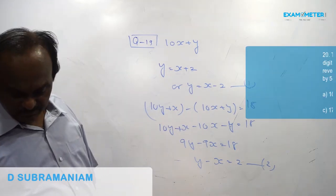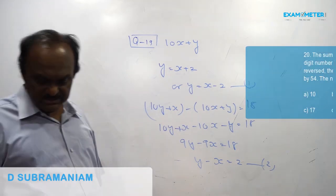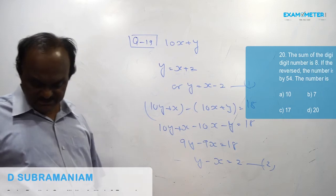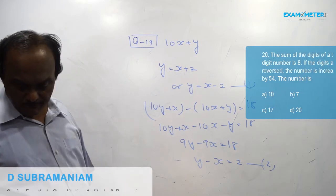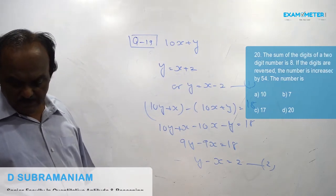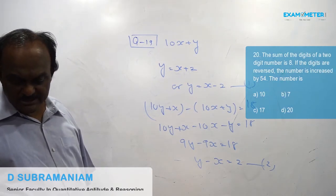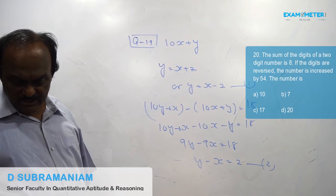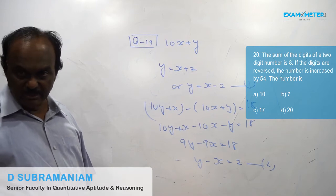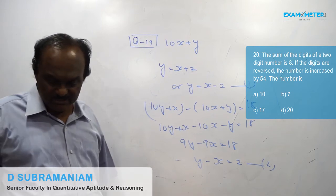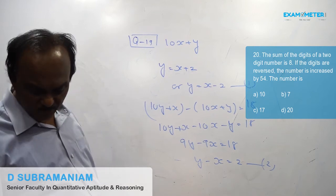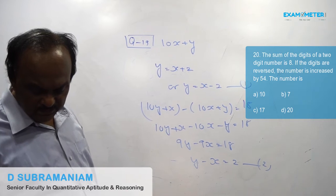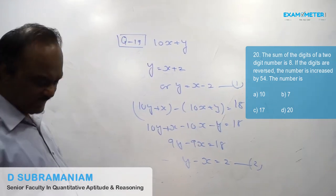Question number 20: The sum of the digits of a two-digit number is 8. If the digits are reversed, the number is increased by 54. The number is?